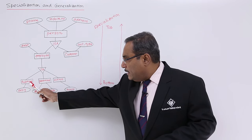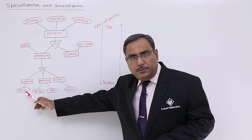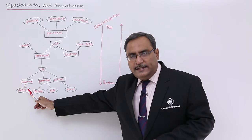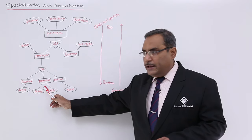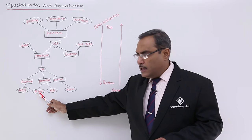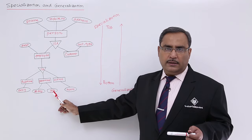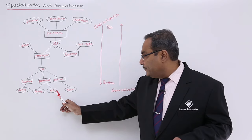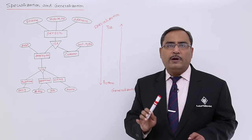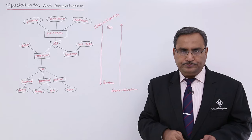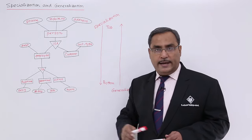In case of full-time employee, the attribute is designation. This part-time employee is having number of days worked and job assignment. And this ad hoc employee is having the hours count. So this is the total ER diagram.